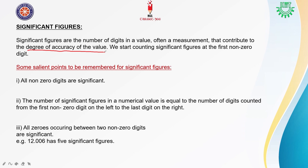We start counting Significant Figures at the first non-zero digit — that is, whatever non-zero digits we get between 1 and 9, we start counting Significant Figures from there. Now we will see how many Significant Figures there are. We have to remember some points. First point: all non-zero digits are significant.